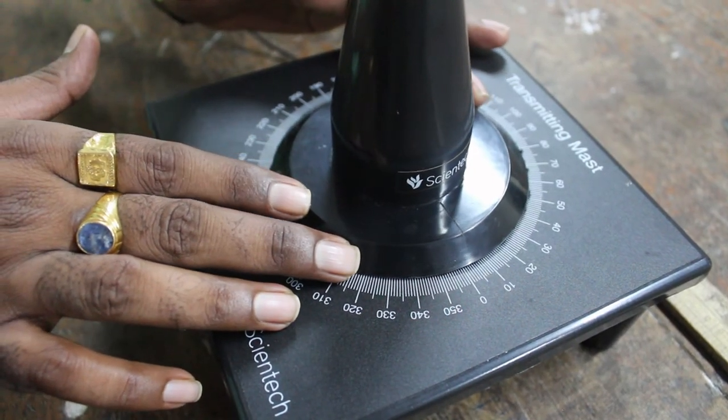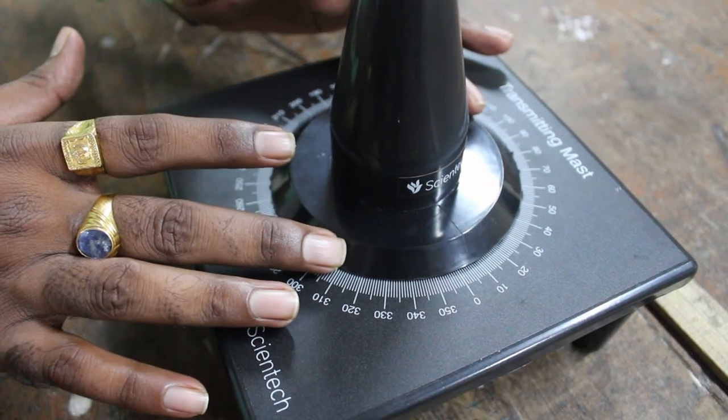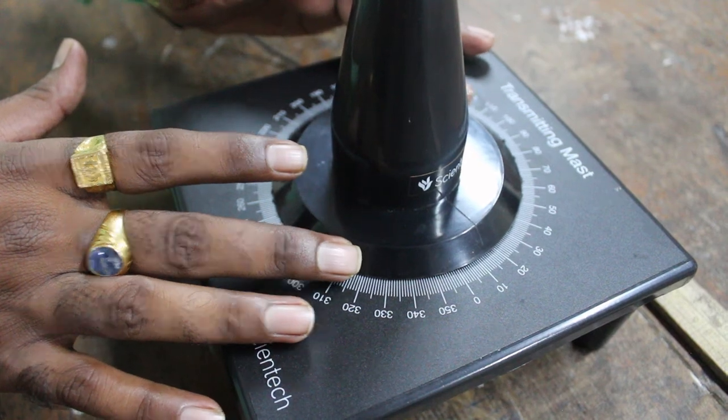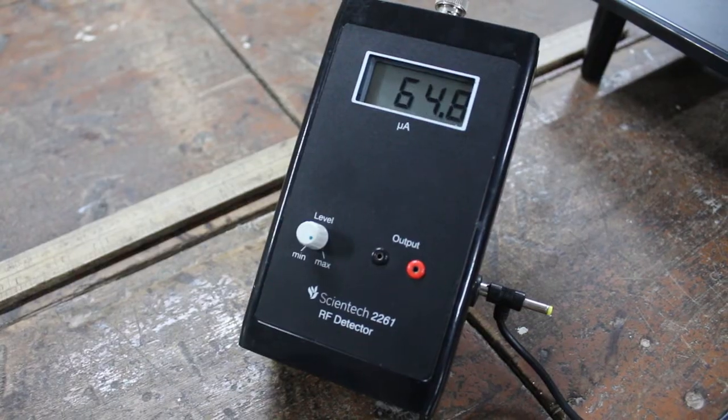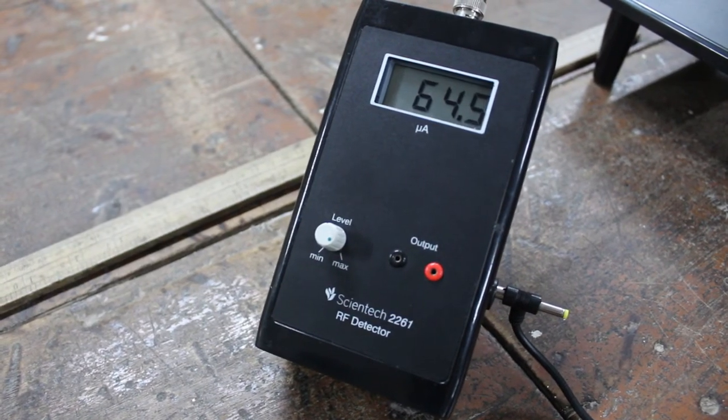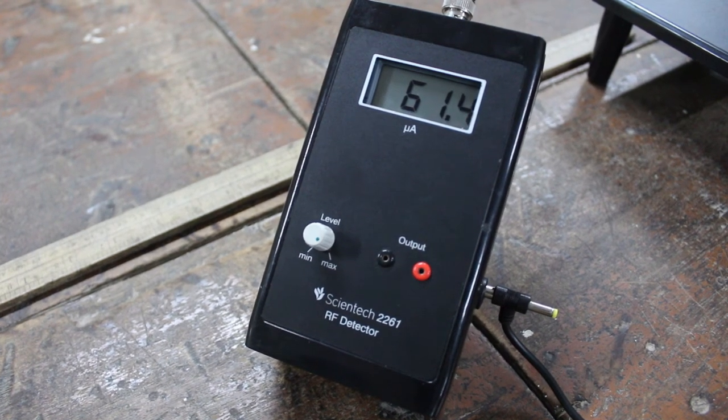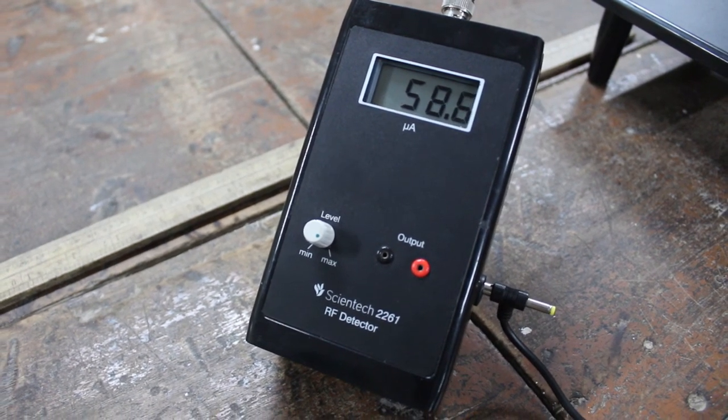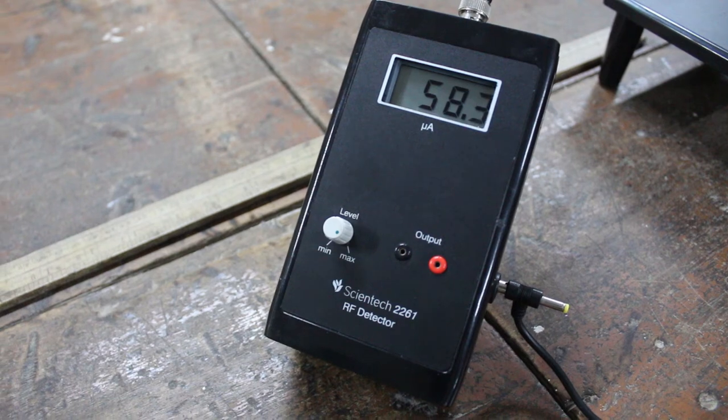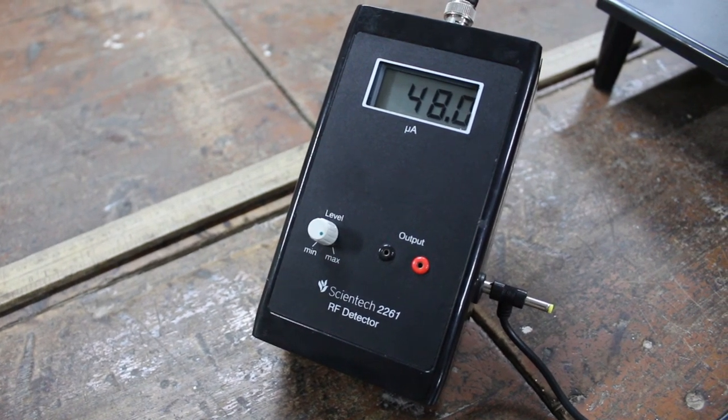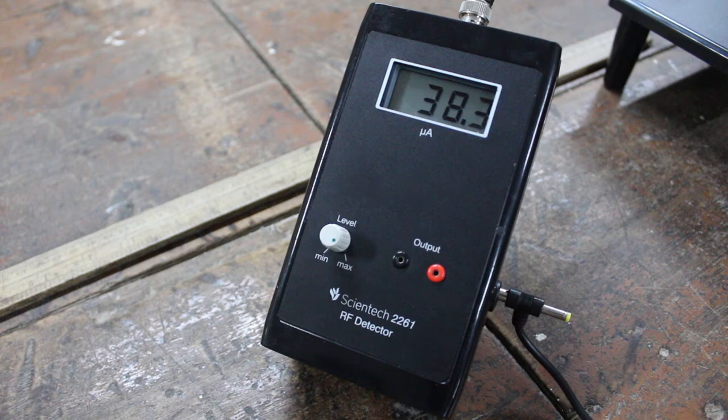Now rotate the transmission mast by steps of 10 degrees and note down corresponding readings on the RF detector. Write down all the readings in steps of 10 degrees and note them in the chart below. Convert all the readings into decibels by using the formula. Repeat the process till 360 degrees.